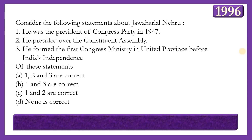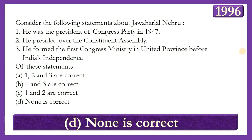Next question: Consider the following statements about Jawaharlal Nehru: (1) He was President of Congress Party in 1947; (2) He presided over the Constituent Assembly; (3) He formed the first Congress Ministry in United Provinces before India's Independence. Which are correct? The answer is option D — none of these statements is correct — because in 1947 J.B. Kripalani was the Congress president, Dr. Rajendra Prasad presided over the Constituent Assembly, and Govind Ballabh Pant formed the first Congress Ministry in United Provinces.